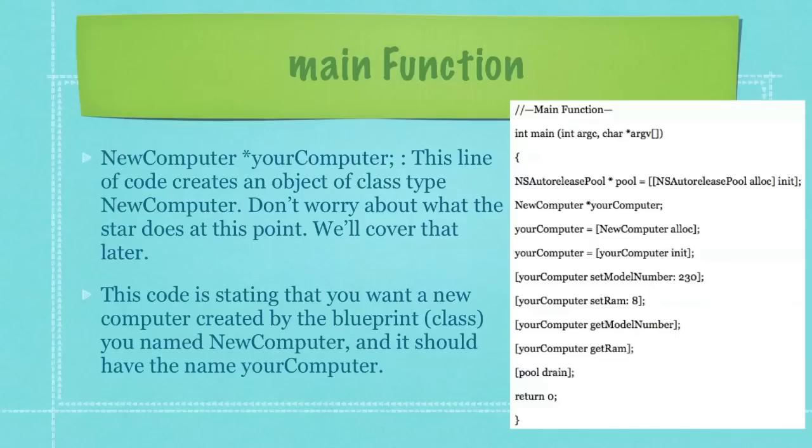The line of code that begins with NewComputer followed by a star does the following. This line of code creates an object of class type NewComputer. Don't worry about what the star does at this point. We'll cover that at a later date. This code is stating that you want a new computer created using the blueprint or class you named NewComputer. And it should have the name yourComputer.